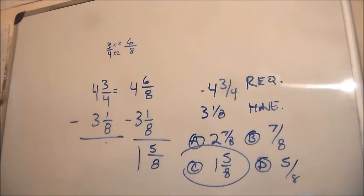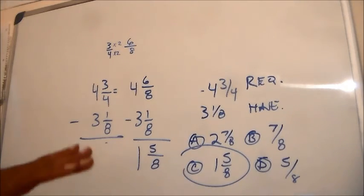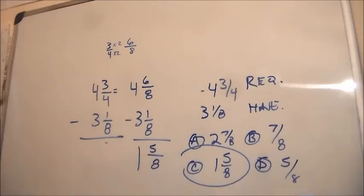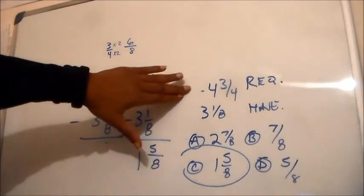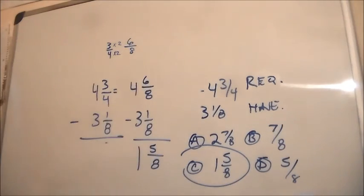So, answer C is our answer. One and five eighths. One and five eighths. We need more. A cup and five eighths more flour because we only have three and one eighths on hand in order to satisfy the recipe. So, that's it. Keep watching. Subscribe. Continue to watch. This is ASVAB Weekly. Thanks. Good night.